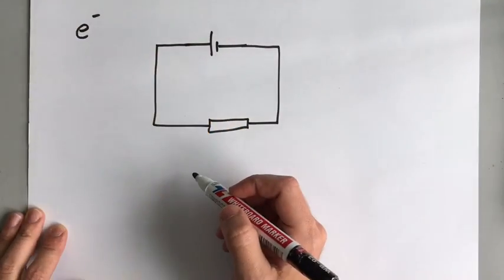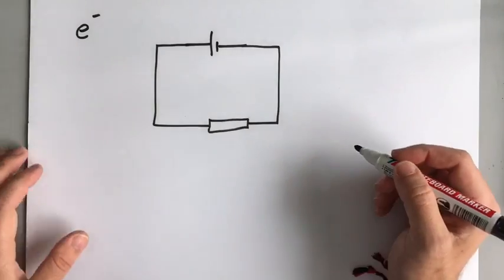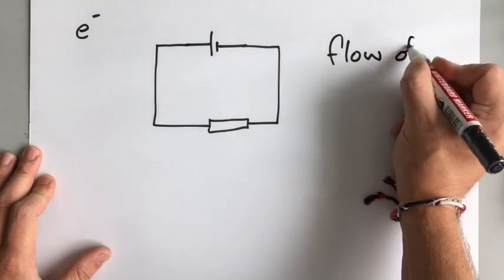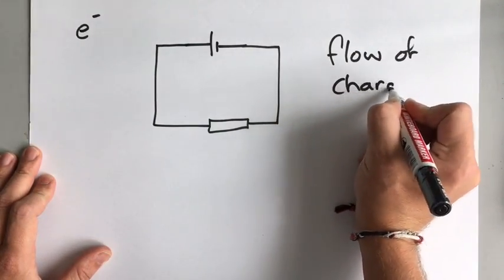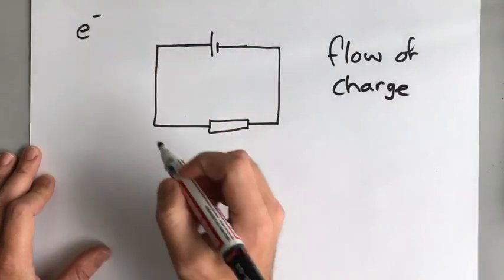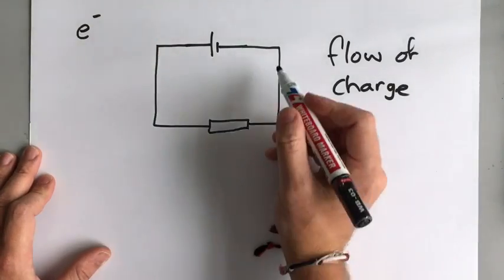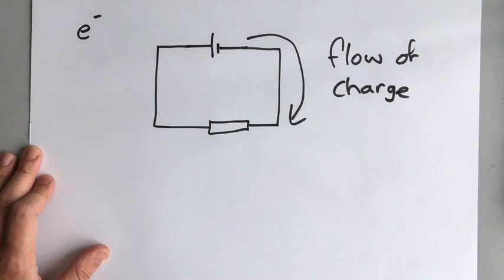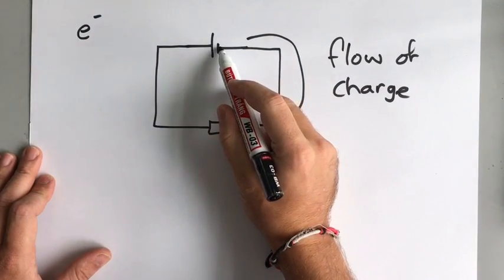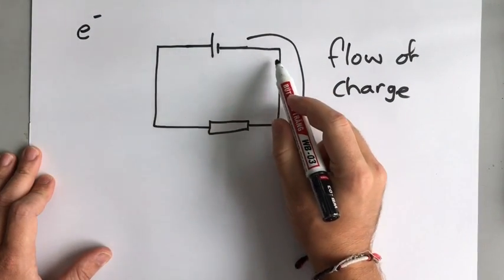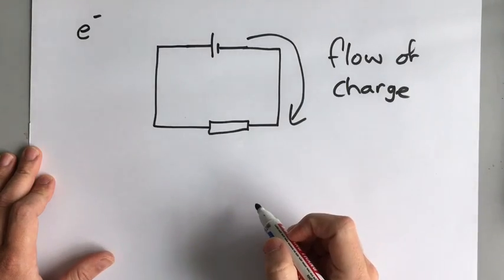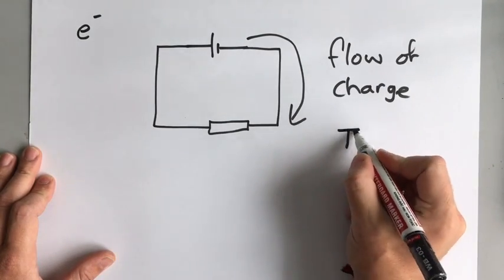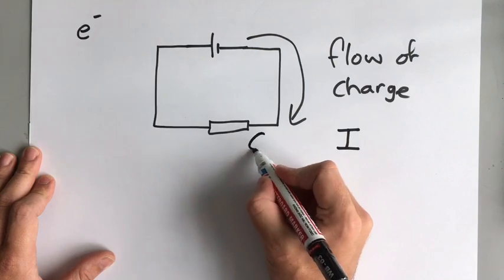So if these electrons can move, then we can have a flow of charge. That negative charge is moving. When that charge moves, what's actually happening is those electrons are flowing down these wires, and we call that flow of charge current, and we give that the letter I.